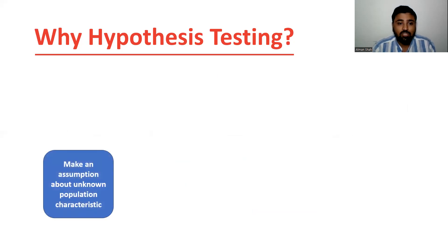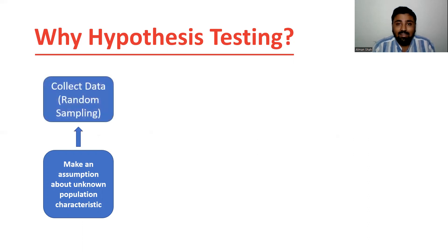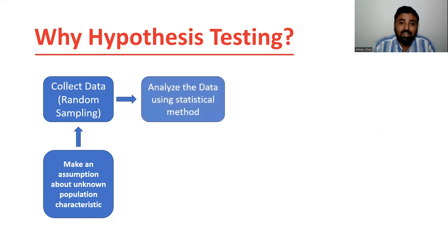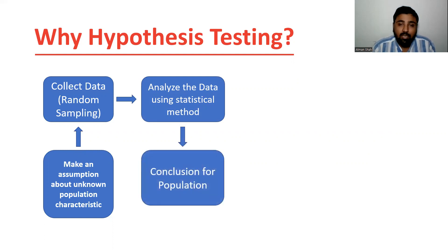So we first make an assumption about an unknown population characteristic. Then we collect data through random sampling, because it is not possible to ask each and every UG and PG student. Since we cannot use the entire population, we collect data through random sampling and then analyze it with the help of an appropriate statistical method. By analyzing the data we give a conclusion for the population. The procedure is: first we have the assumption, then we collect the data, we analyze the data, and we conclude.